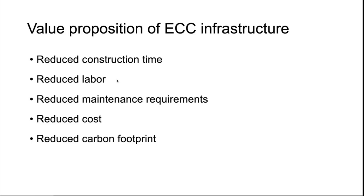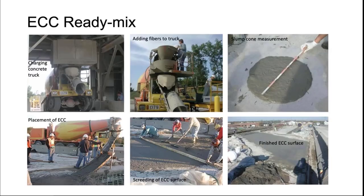The material needs to be properly processed, and there are some differences compared to normal concrete. In an example where ECC was used on a link slab on a bridge deck near the University of Michigan, a ready-mix truck charged the material with fibers added on top. Quality control used slump cone measurements. The material is actually very flowable — it flows into the formwork — and screening and finishing of the surface is similar to operations typical in concrete construction.